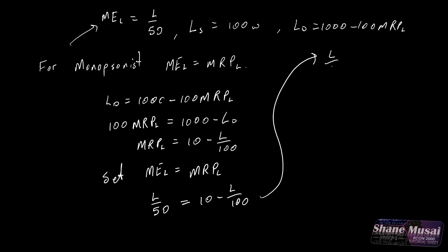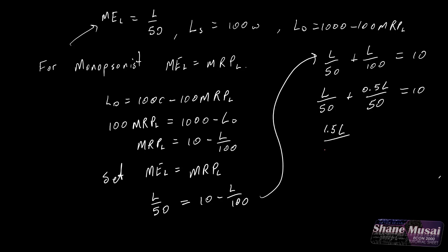So we have L over 50 plus L over 100 equals 10. That gives us L over 50 plus 0.5L over 50 equals 10. Therefore 1.5L over 50 equals 10. Therefore 1.5L equals 500. Therefore L equals 333.